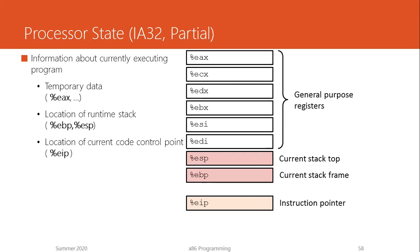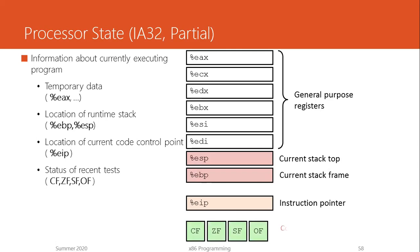When you execute a branch instruction, you are actually changing the value of the instruction pointer register because it changes which instruction is executed next. And finally, the condition codes — which we have seen in earlier videos — are used to determine certain conditions; in other words, whether or not the jump is going to happen. This will be the focus of this video.